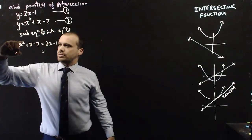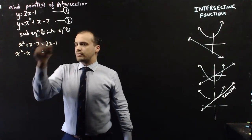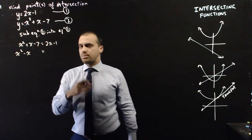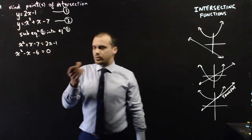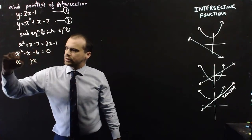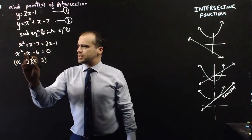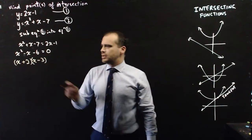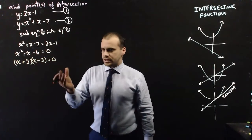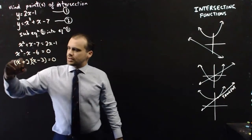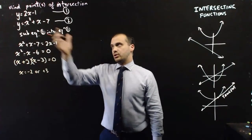Then we simplify: x squared, then x minus 2x gives minus x, and moving everything to one side, negative 7 and the negative 1 comes over as positive 1, so we get x squared minus x minus 6 equals 0. It looks factorizable — I think I need a 2 and a 3, and it needs to be negative, so I need (x plus 2)(x minus 3). Using our null factor law, x equals negative 2 or positive 3.